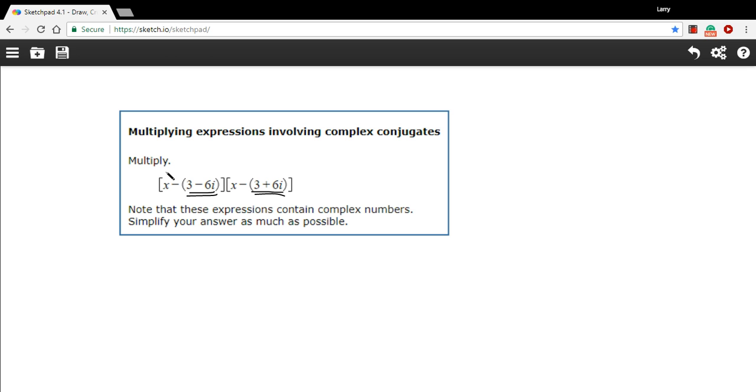So if I were to foil, I'd do the first terms, so x times x is x squared, and I would do the outside terms, so that would be x times a negative 3 plus 6i. So that would be minus x times 3 plus 6i. And then I would do the inside terms, that's going to be a minus x times 3 minus 6i.